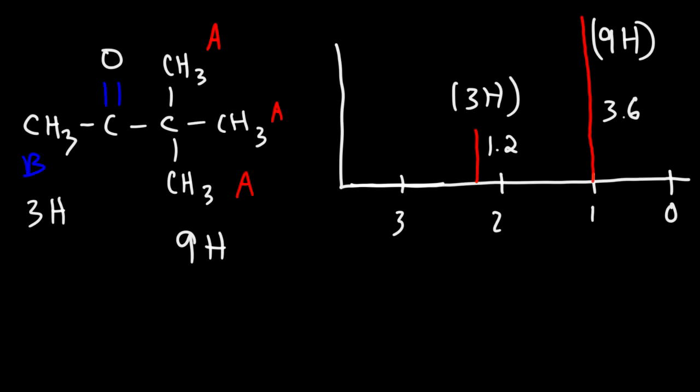So whenever you have a signal that corresponds to more protons, that signal is going to appear taller. The one with less protons will always appear shorter.